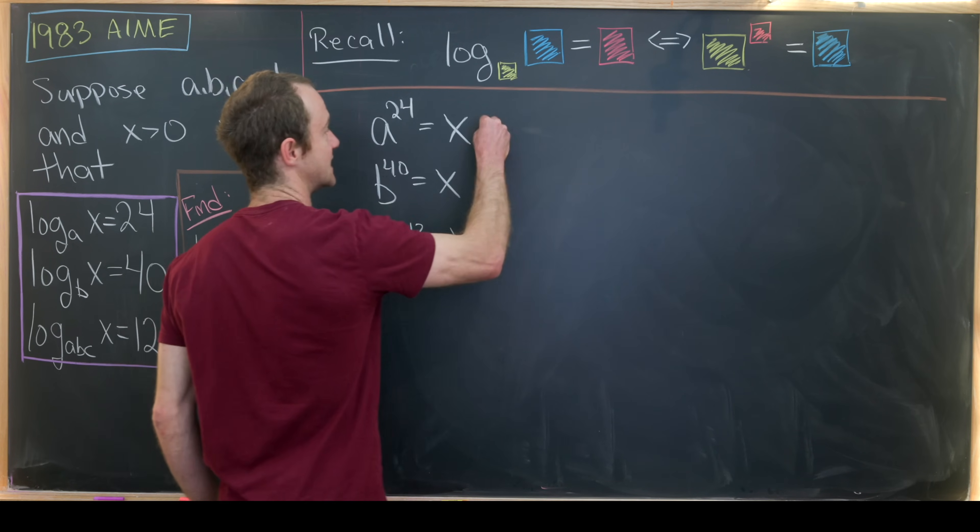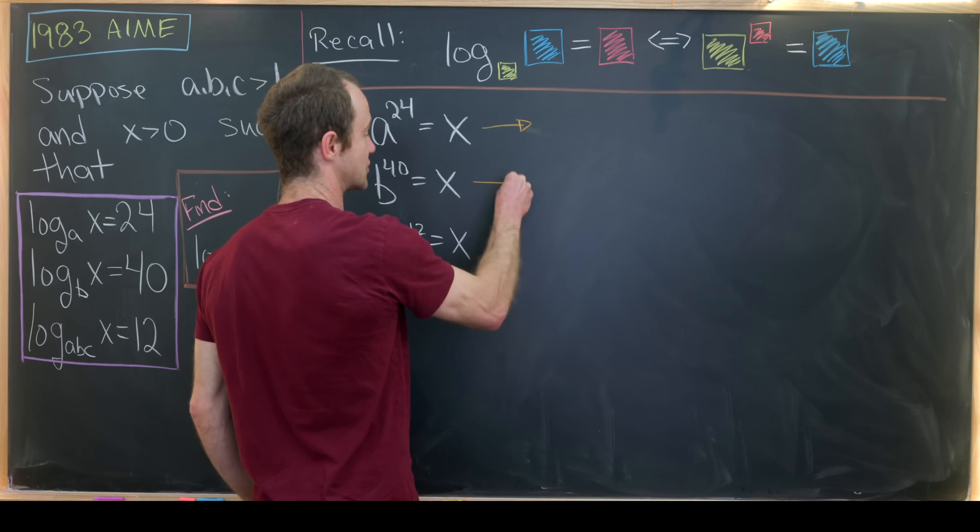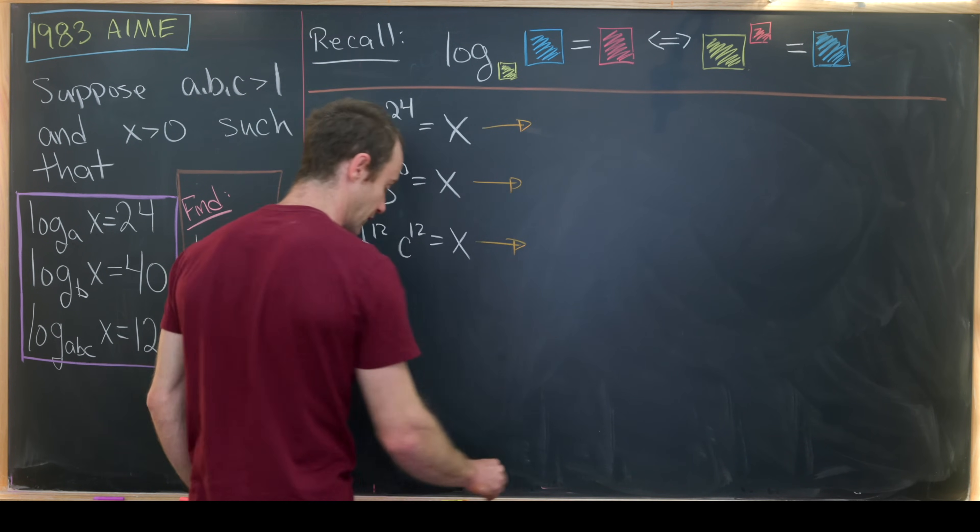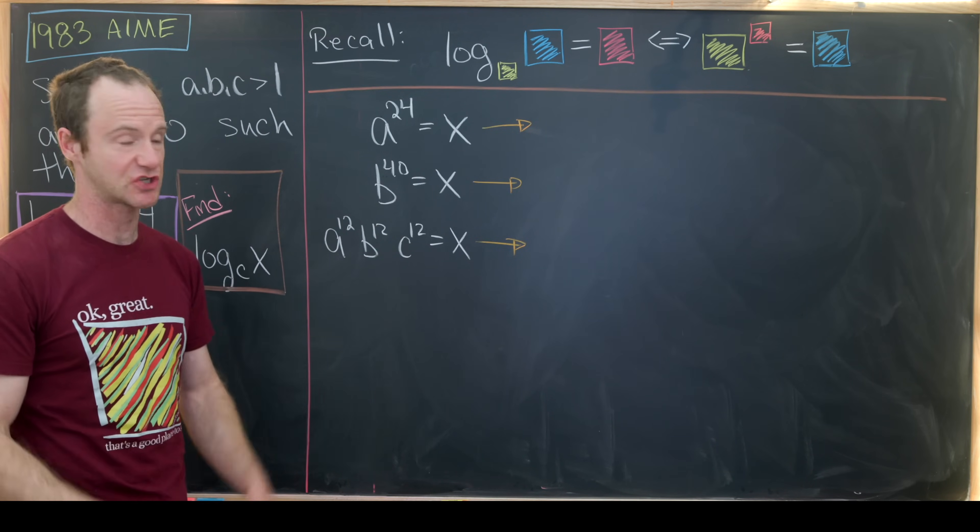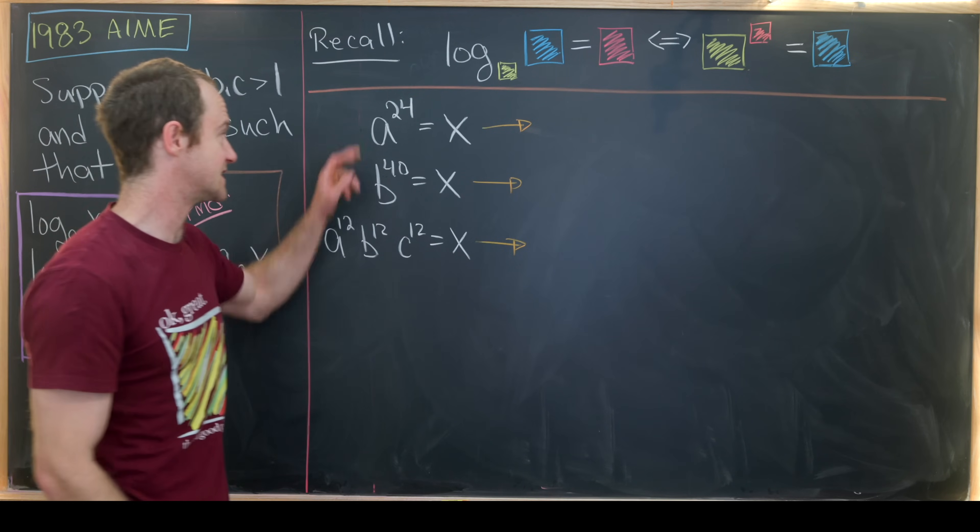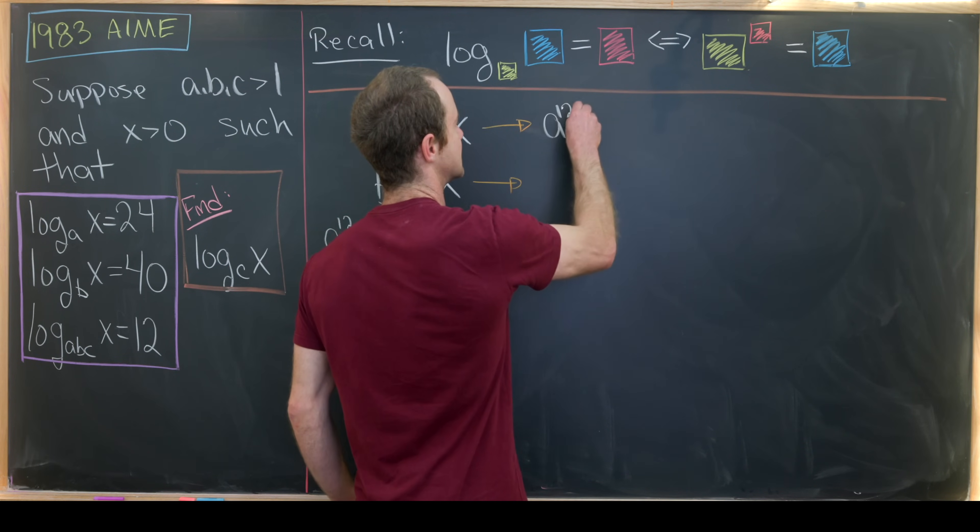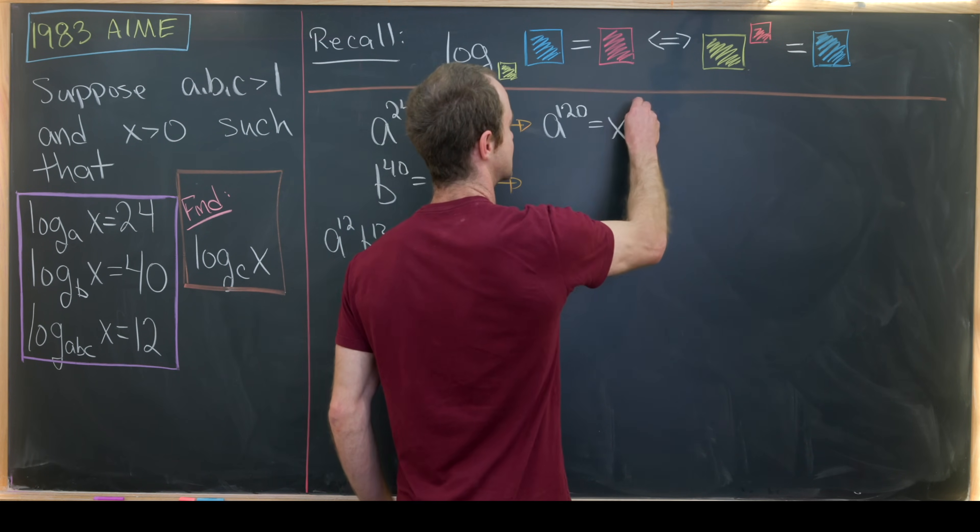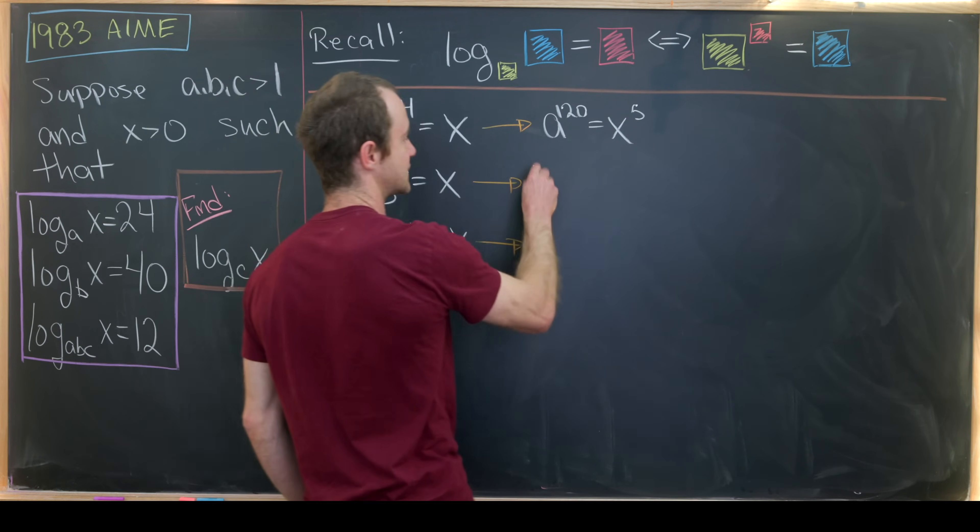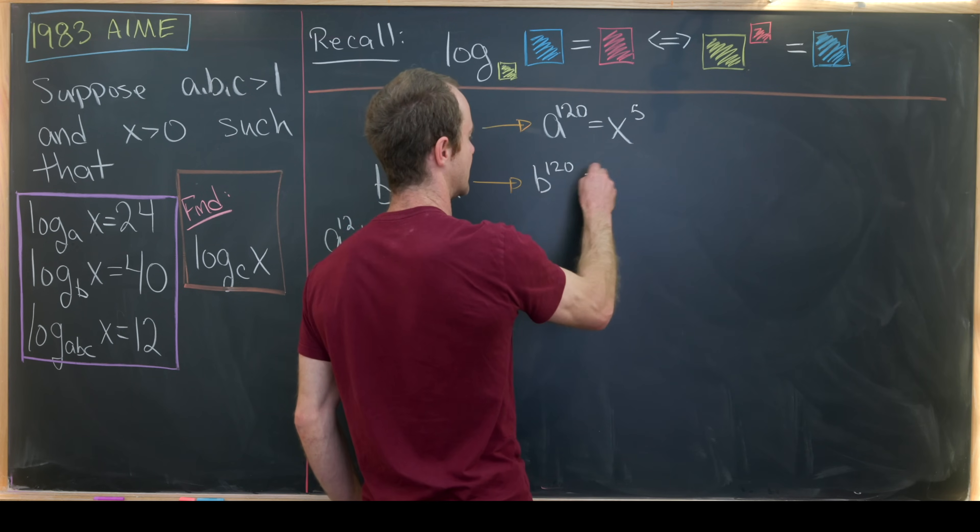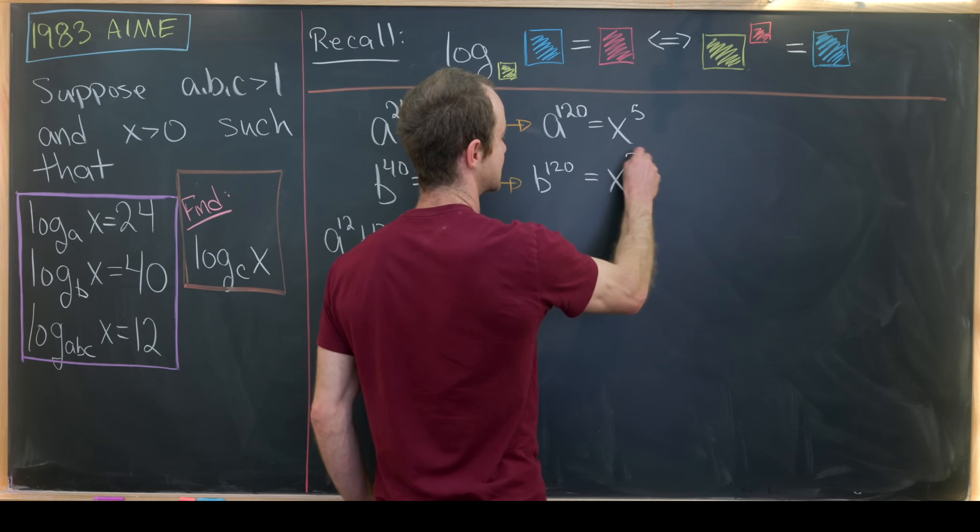So that means we can translate each of these to exponential equations having to do with a power of 120 by raising these equations to a sufficient power. We can raise this to the fifth power, that'll give us A to the 120 equals X to the 5. We can raise this to the third power, so we'll have B to the 120 is equal to X cubed.